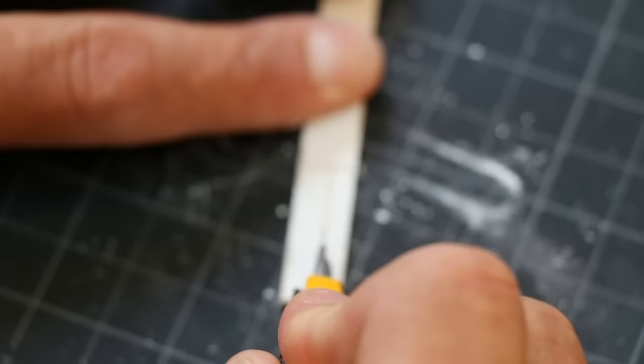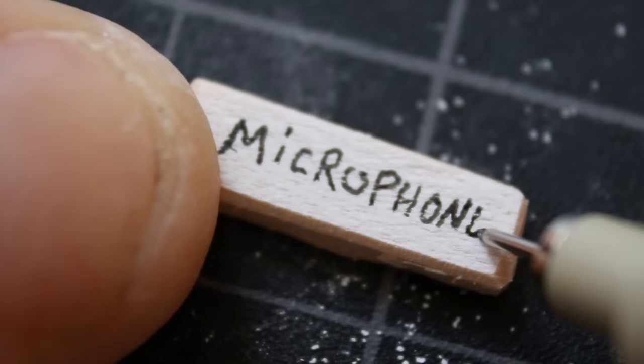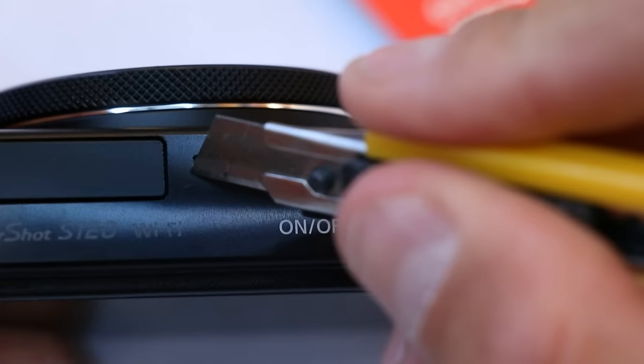Now cut the white end of the popsicle stick to those dimensions, and now you want to label that tiny piece of wood. Score the camera to give the epoxy something to bite on to.